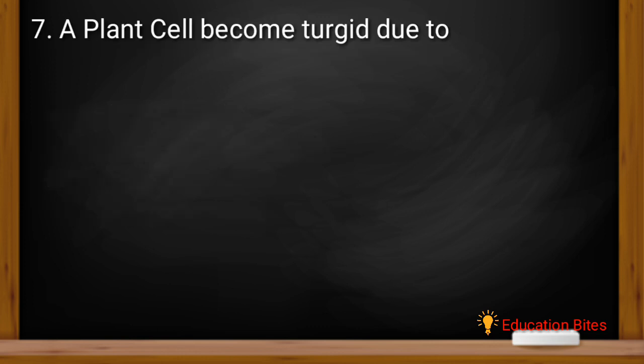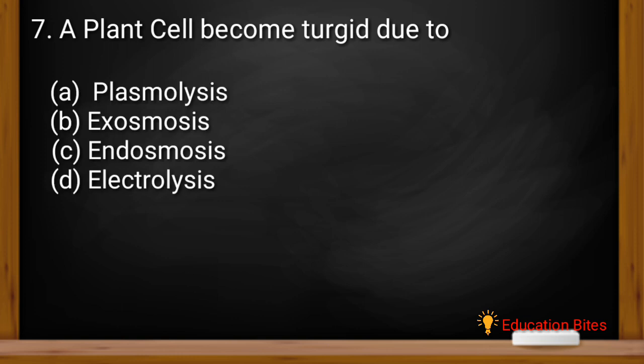The next question is, a plant cell becomes turgid due to. Turgid means swollen or full. The options are plasmolysis, exosmosis, endosmosis or electrolysis. The correct answer is endosmosis.